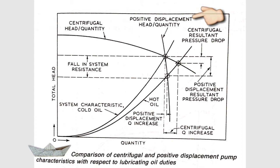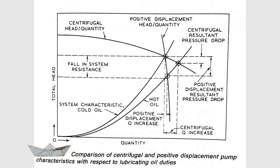Looking at the flow rate increment for the positive displacement pump, the increase is very small in comparison. The centrifugal pump has the upper hand — the flow rate to the main engine bearing, pistons, and other parts is much higher, meaning the cooling efficiency is also much higher. As lube oil becomes hotter, its viscosity decreases and friction resistance between fluid layers is less, so the centrifugal pump flow rate increases significantly compared to the positive displacement pump.